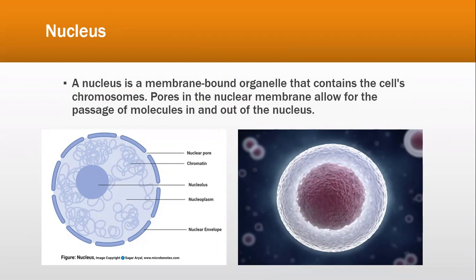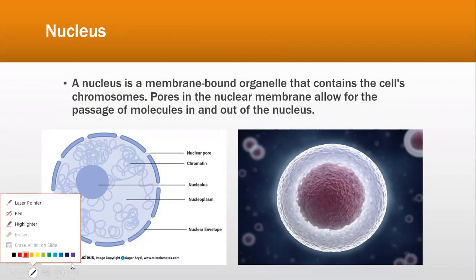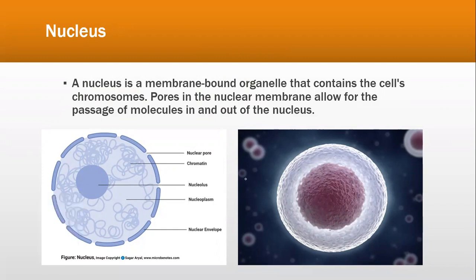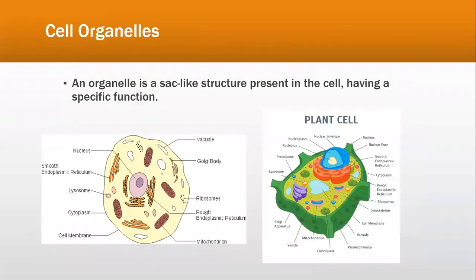In the diagram, you can see that we have a nuclear pore, chromatin, a nucleolus, and nucleoplasm — which is the name of the cytoplasm inside the nucleus. Then we have a covering known as the nuclear envelope, which has all the pores present for the exchange of substances.